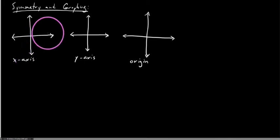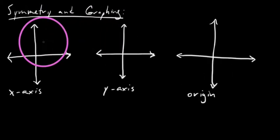Hi everybody. In this video we're going to be discussing the idea of symmetry and graphing. What we're trying to do is sketch pictures of graphs that represent variable relationships. These graphs tend to be more difficult than a standard graph from algebra, like a line or a parabola. Knowing a little about symmetry before we isolate a variable or make a table of values and plot points gives us insight into how the graph might behave.